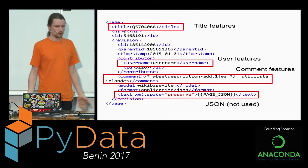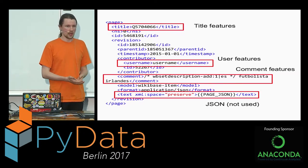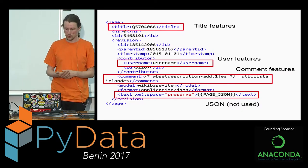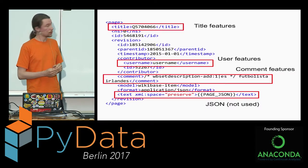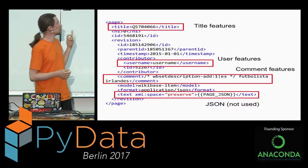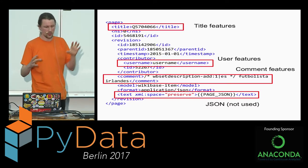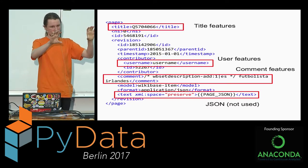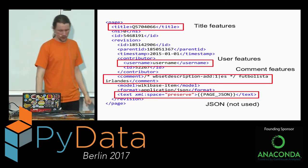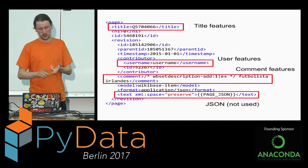We should also use the user feature, because some users may tend to be more vandalic than others. It's not only the username but also the IP of the user when not logged in. For the revisions, we also have comments, and we have the JSON format. I didn't use the JSON content because it was too large and it wasn't really possible to compare two revisions and see what changed. So I used only title, username, and comment.